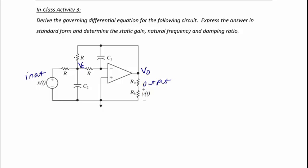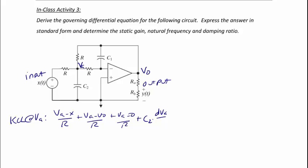Doing KCL at node VA, we get: (VA minus x) over R, plus (VA minus VO) over R, plus (VA minus 0) over R, plus C2 dVA dt, equals zero. We're assuming an ideal op-amp with two assumptions: the voltage at the negative and positive terminals is the same — since the positive terminal is tied to ground, the negative terminal voltage is also zero — and there is no current flowing into the op-amp.